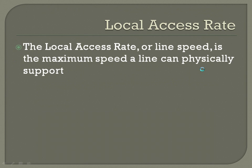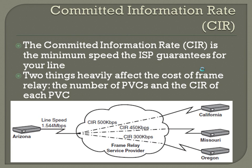The local access rate, or line speed, is the maximum speed that a line can physically support. Going along with that is the committed information rate, or CIR. The local access rate is what the line can physically support — just the physics of that technology, the number of bits that you can possibly send. The CIR is the minimum speed the ISP guarantees for your line, and it's usually a paid rate. Two things heavily affect the cost of frame relay: the number of PVCs and the CIR of each PVC.